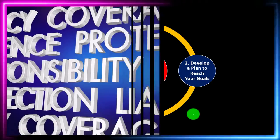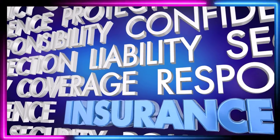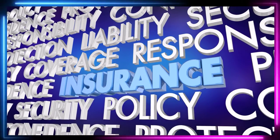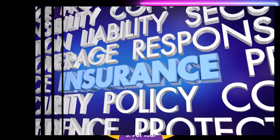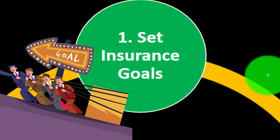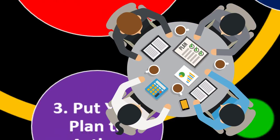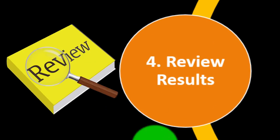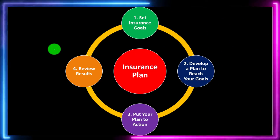Insurance is part of our long-term risk mitigation strategy where we follow the adage of measure twice, cut once. Put a formal process in place: set the goals, develop a plan to reach them, put the plan in action, review the results, and repeat the process periodically.